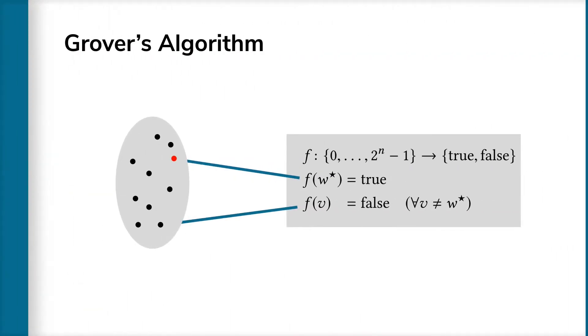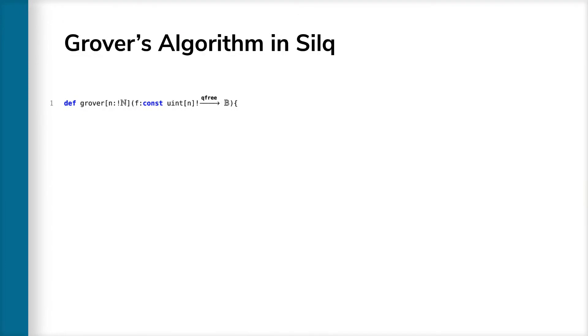To take a closer look at Zilk, we demonstrate it on Grover's algorithm, which solves the following search problem. Given a function f which returns false everywhere except at the single solution w star, find w star. Note that f operates on n bit unsigned integers and returns booleans.